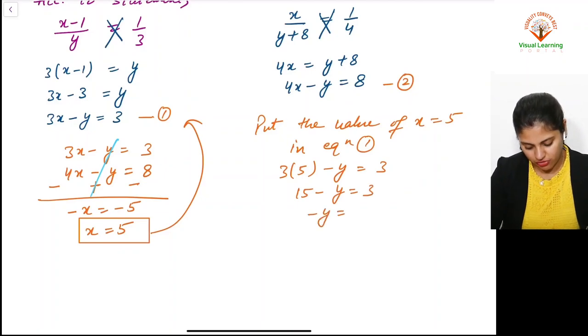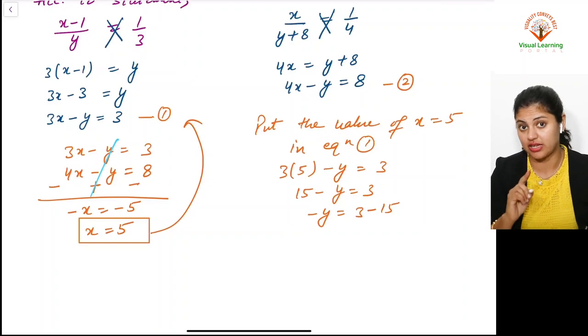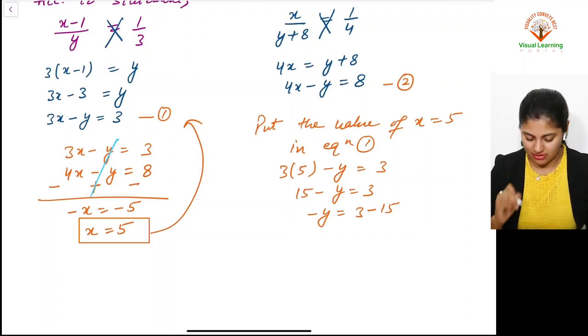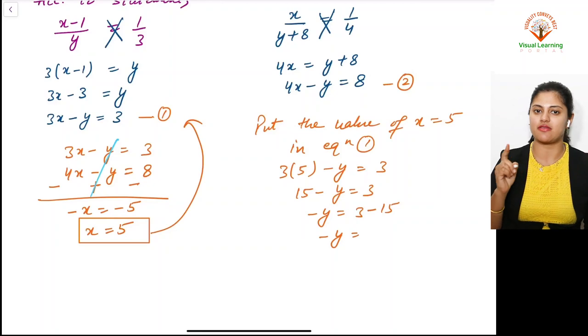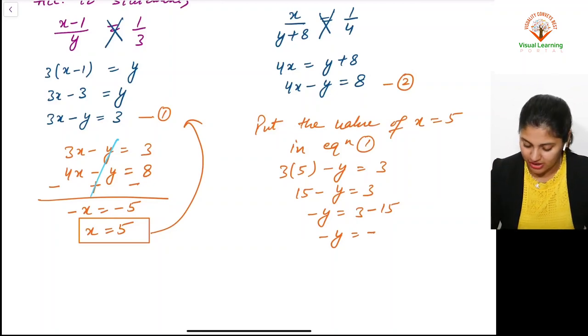-y = 3 - 15. Make sure it's minus y; don't forget the sign. 15 changes from plus to minus when crossing equals. Check the sign of the bigger term. The bigger term is 15, so the negative sign comes.